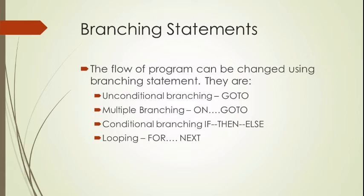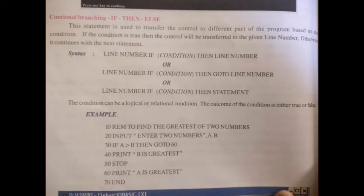Conditional Branching: If, Then, Else. In an If statement, a condition will be given. If it is true, the Then part will be executed. If it is false, the Else part will be executed. For example: If the teacher is on leave, then go to PT period. Else, sit in the classroom.